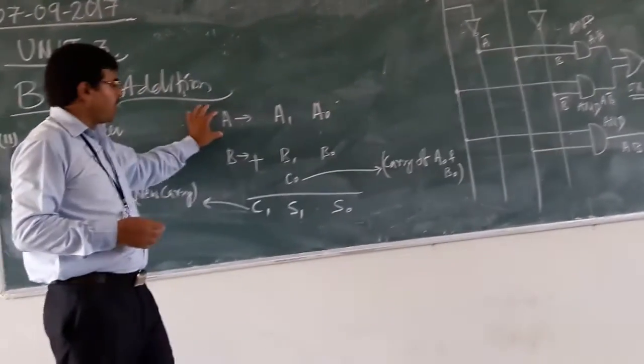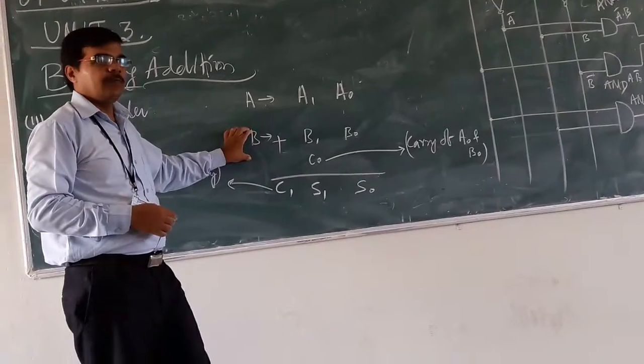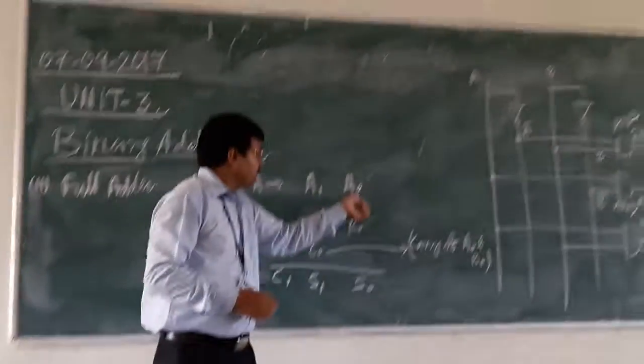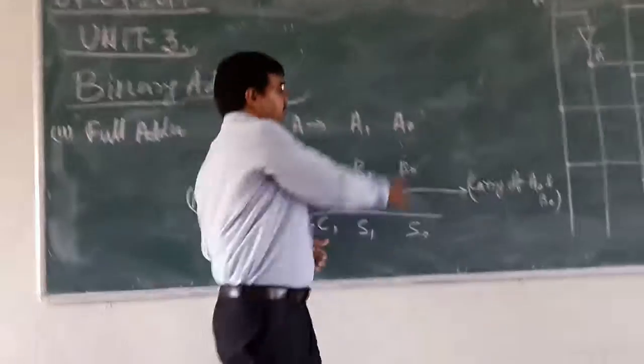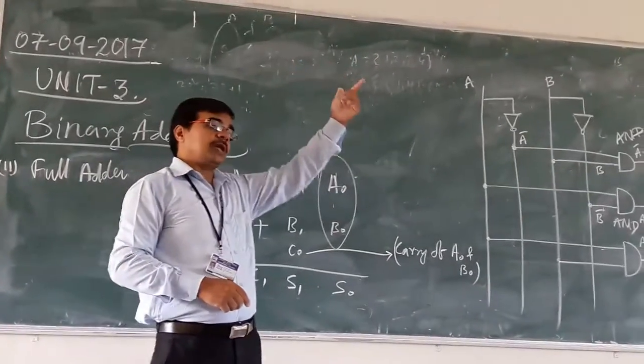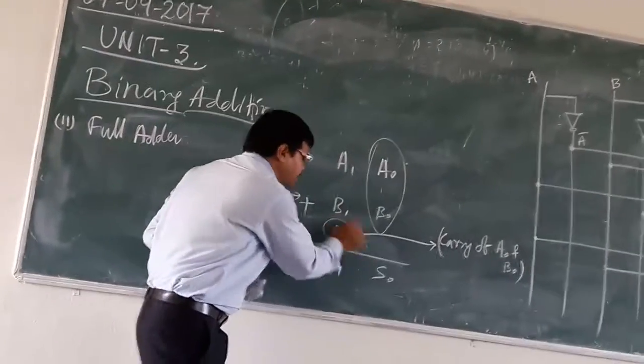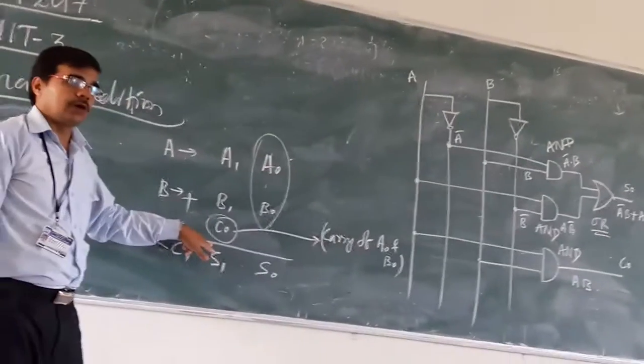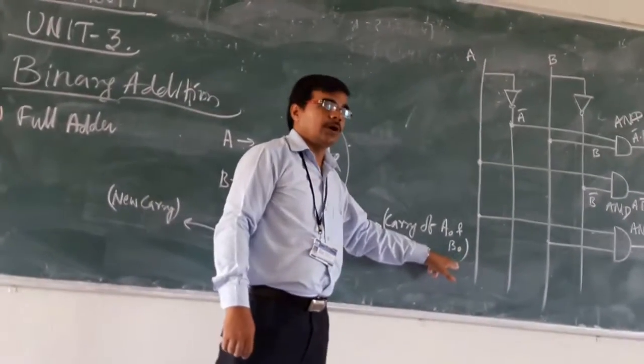Let us assume that we are having A and B as the input. For A, we are having A0 and A1. For B, we are having B0 and B1. These A0 and B0 are the input that we are using in case of your half adder. And here we are adding it with C0. C0 is the carry of your A0 and B0.